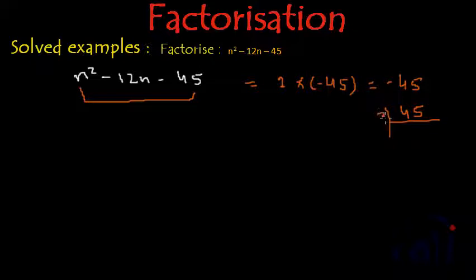So this is divisible by 3: 3 ones are 3, 3 fives are 15. So the factors of 45 are actually 3, 3, and 5. And any one of them can be negative.